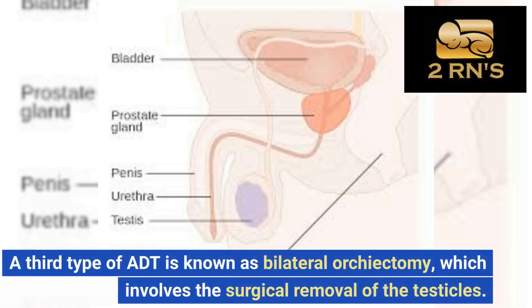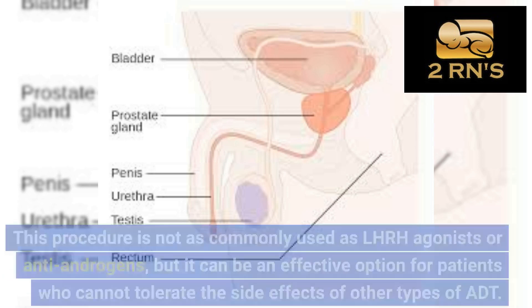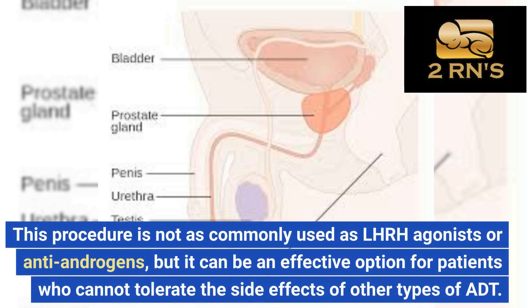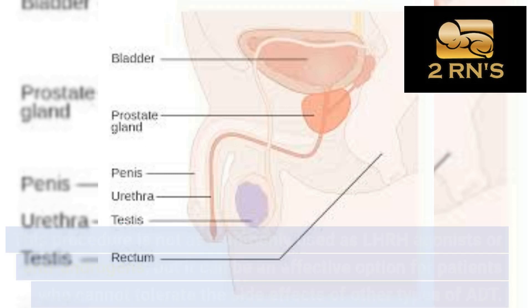A third type of ADT is known as Bilateral Orchiectomy, which involves the surgical removal of the testicles. This procedure is not as commonly used as LHRH agonists or Antiandrogens, but it can be an effective option for patients who cannot tolerate the side effects of other types of ADT.